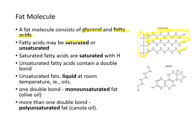Fatty acids can be either saturated or unsaturated. Saturated fatty acids are saturated with protons, meaning they don't have a double bond. Unsaturated fatty acids contain double bonds and tend to be liquid at room temperature — oils. If it has one double bond, it's called monounsaturated fat, and olive oil is an example — a very healthy fat.